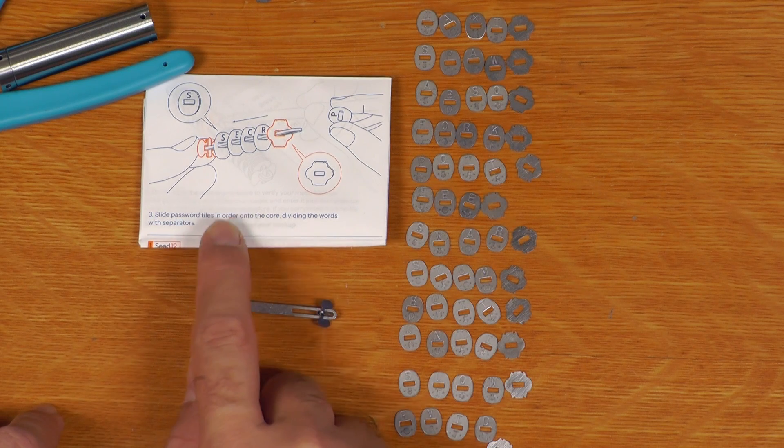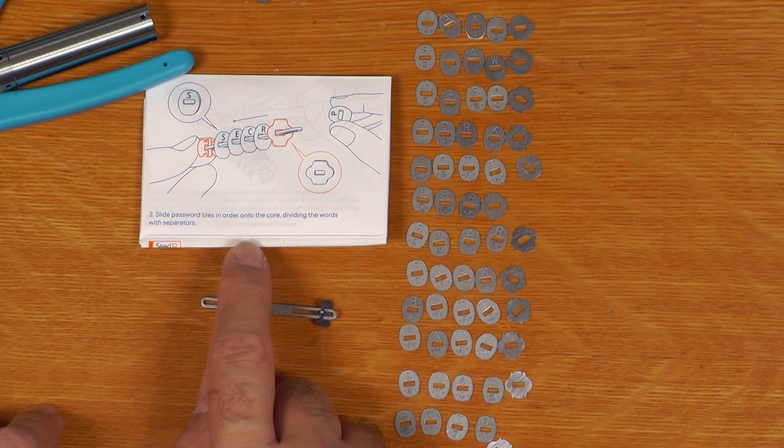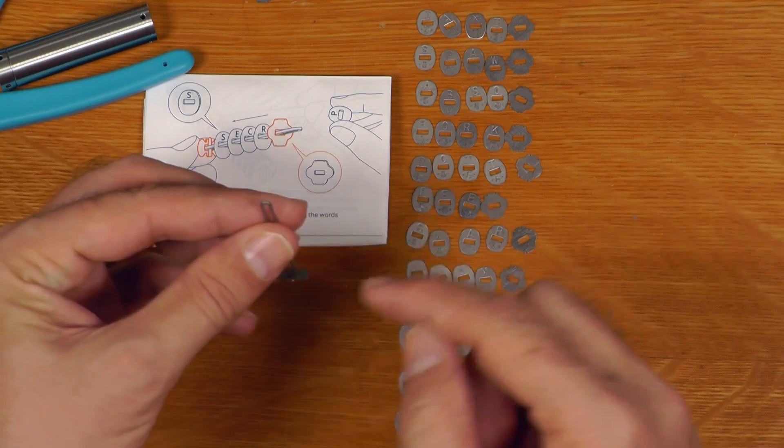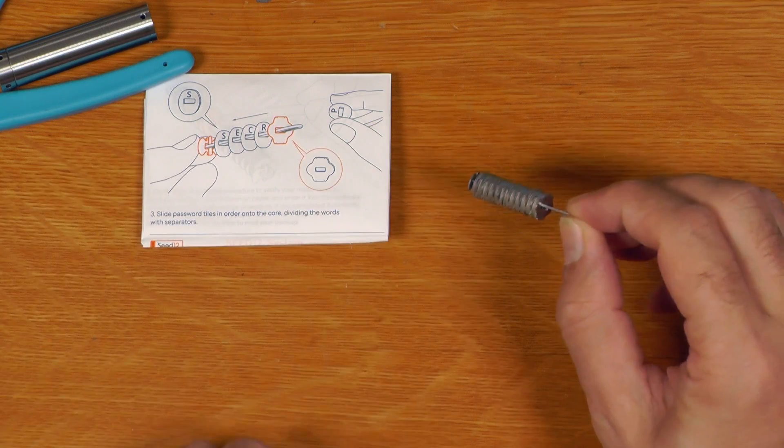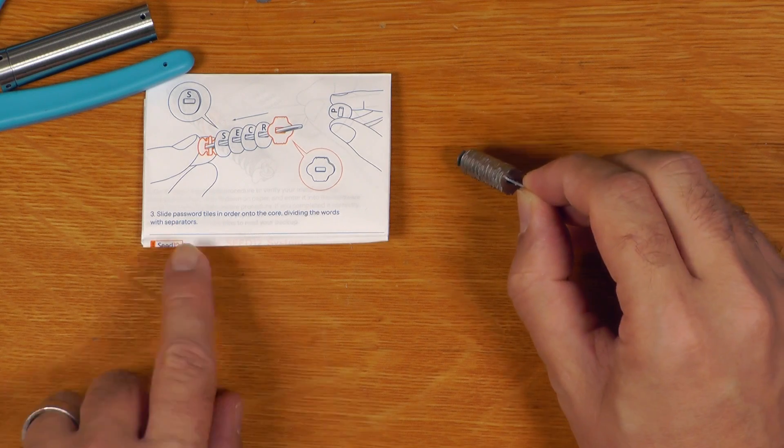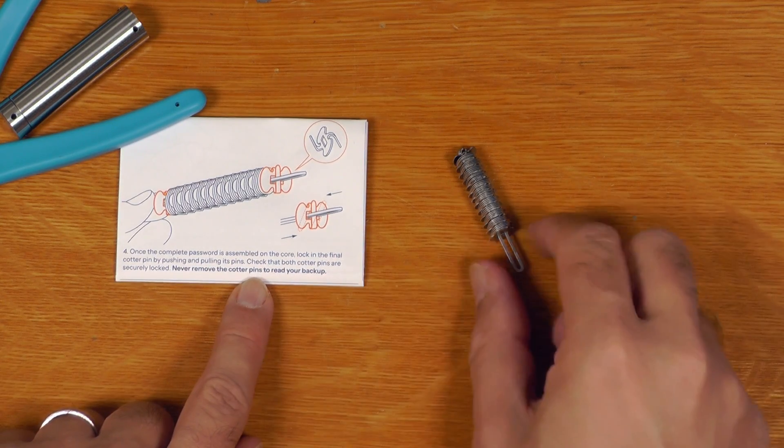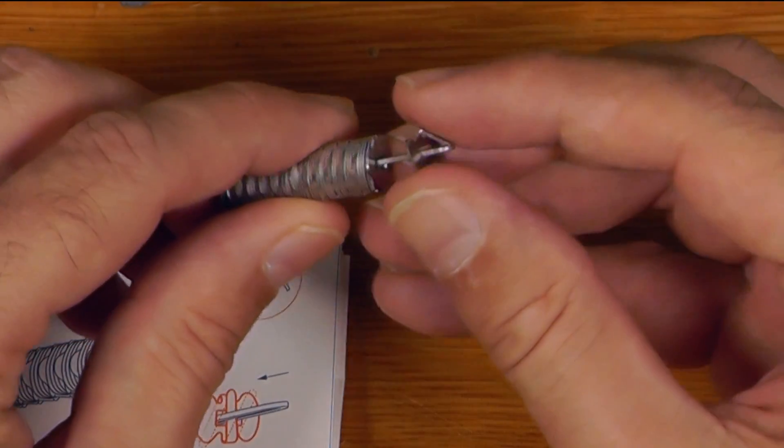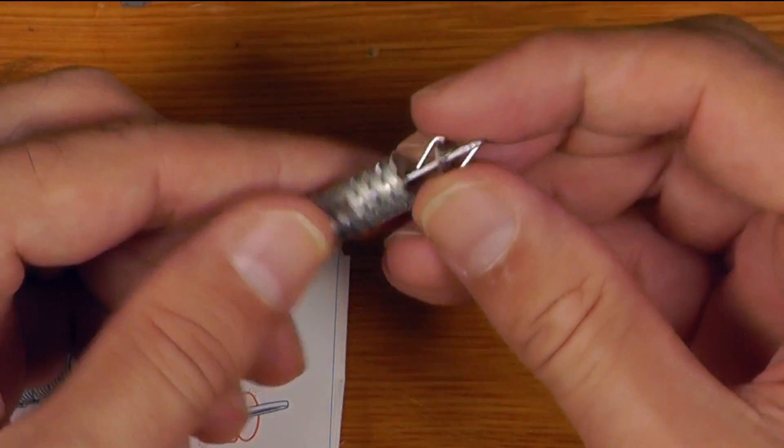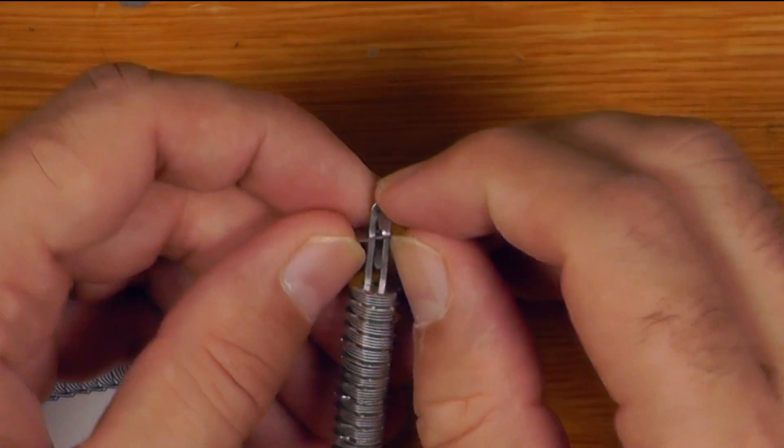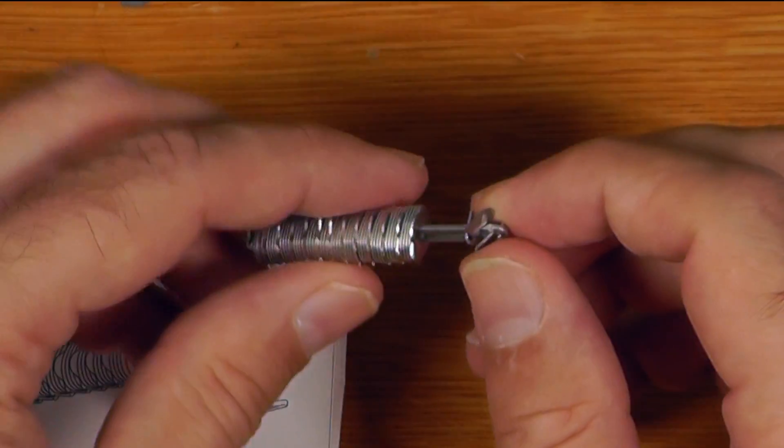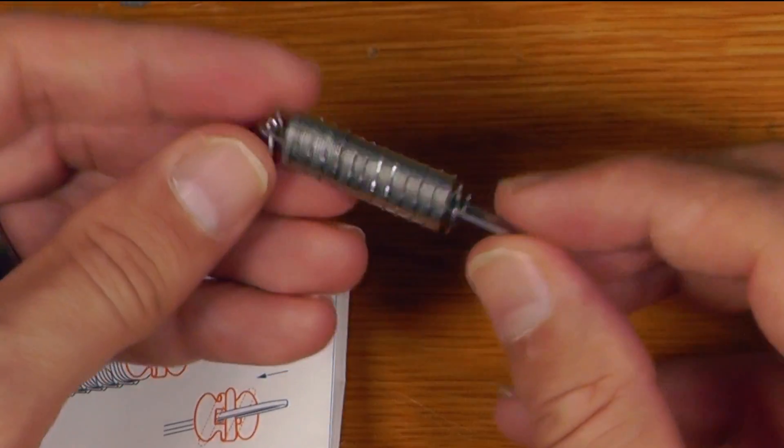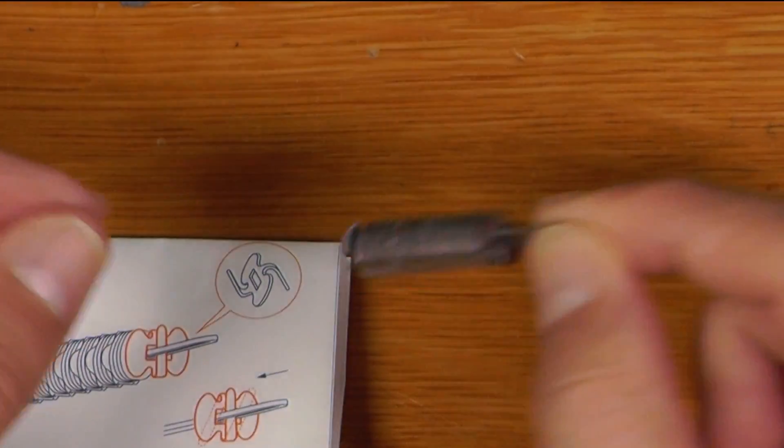Okay. So, step three, slide the password tiles in order, the order matters, onto the core, dividing the words with separators. Now, I've already put the separators out here. So, it's simply a case of putting these on onto here. Okay. So, they are all now on the core. And so, step four is once the complete password is assembled, then we place one of these back on the end. They're called the clasp. So, basically, we put it on there. And just like the last one, we squash it up against the end to fold one part down. And then we can also fold it up against the other. And there we go. The clasp is now on there. And these tiles will now not come off.